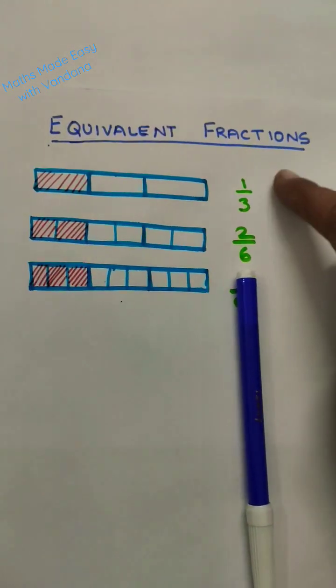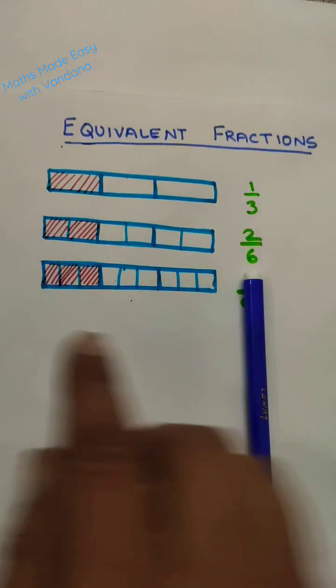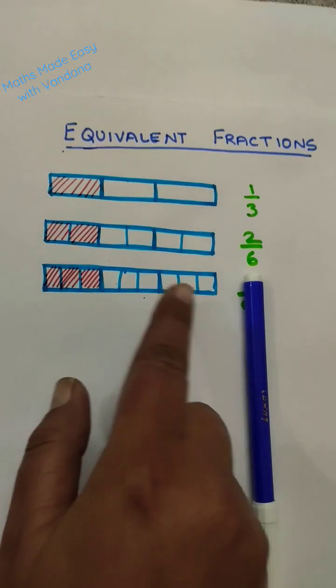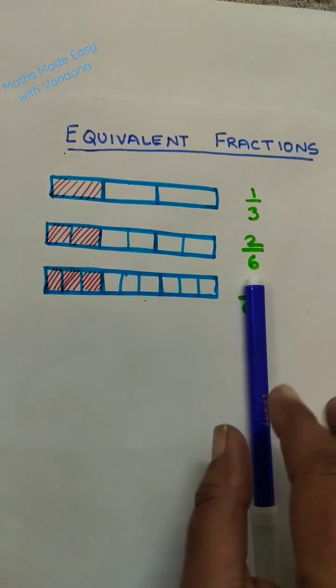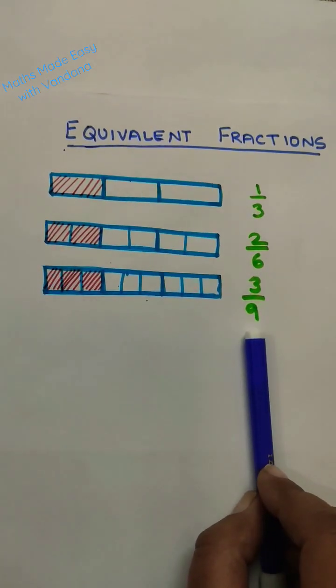Again to make the equivalent fraction of one by three, I have divided into three more equal parts. Now the fraction becomes three by nine.